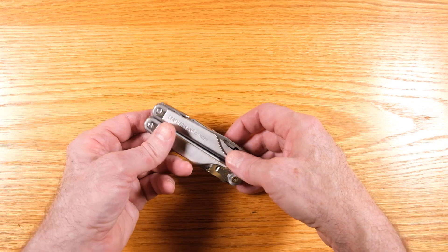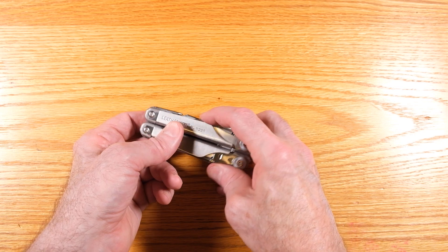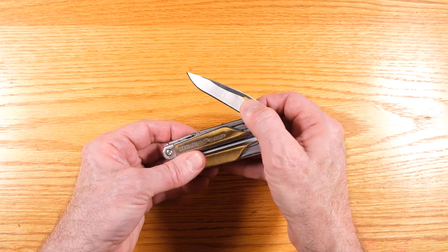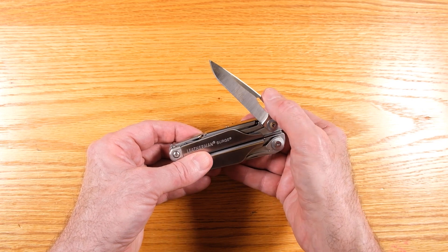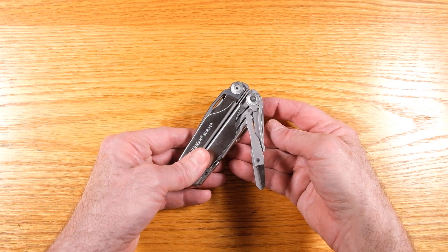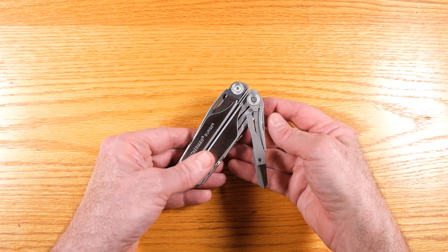So what we have here, there's a serrated blade here. It's got, on the other side here, a regular blade. We've got a pair of scissors here. And these are pretty big scissors. So they're more capable than you would see on a lot of multi-tools.